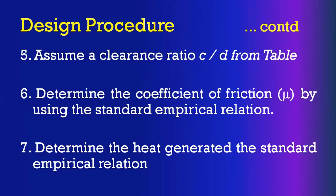The fifth step is to select the clearance ratio C/D — the diametral clearance ratio — from the standard table in the design data handbook. Once we have these values, you can find the coefficient of friction μ using the standard empirical relation: μ = (ZN/33 × 10⁸) × (ZN/P) × (D/C) + k.